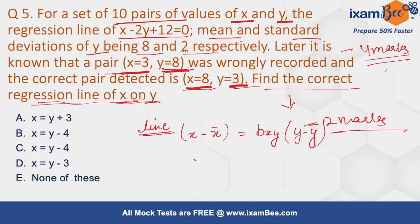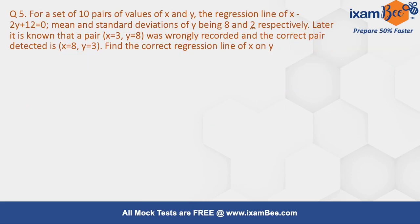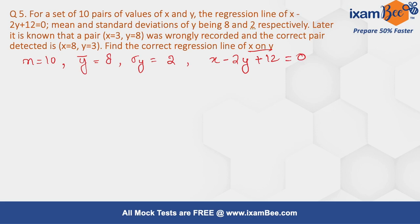Since the pair was changed, we first have to find the correct pair. We need to find the corrected x̄, the corrected ȳ, and the corrected regression coefficient bxy. Once we know all three values, we can easily rewrite the equation. First, let's note down what information is available: n equals 10, mean of y is 8, standard deviation of y is 2, and the regression line for x on y is 2x minus 2y plus 12 equals zero.